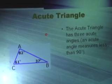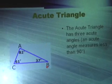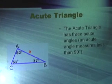Acute triangles have three acute angles, which means that the angles inside are less than 90 degrees.